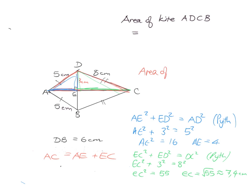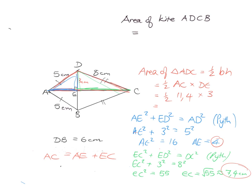So the area of triangle ADC is half the base times the height — in other words, it's half of AC multiplied by DE. AC is made up of AE + EC, so it's 11.4 centimeters, and DE is 3 centimeters. Putting that into the calculator: 3 × 11.4 × ½ = 17.1 cm². The area of the kite is just twice that, which gives 34.2 centimeters squared.